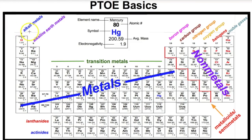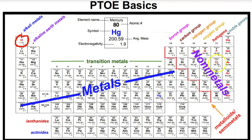There are different named groups on the periodic table. From lithium down to francium are the alkali metals — hydrogen is an exclusion, as it's not a metal but exhibits similar chemical properties. From beryllium down to radium are the alkaline earth metals. Groups 3 through 12 are the transition metals. Then you have the boron group (group 13), carbon group (14), nitrogen group (15), oxygen group (16), halogens (group 17), and noble gases (group 18).